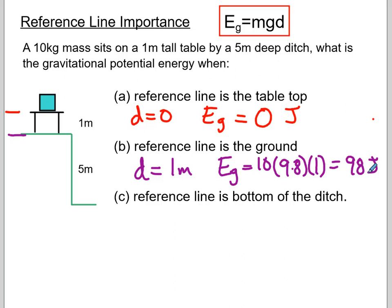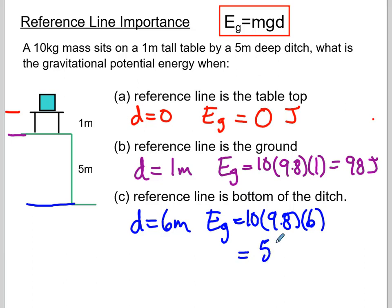Now reference line is the bottom of the ditch. So if I put my reference line down here, my d is now 6 meters, so my Eg is going to be 10 times 9.8 times 6, and if we punch that in our calculator relatively quickly, 10 times 9.8 times 6, 588 joules.